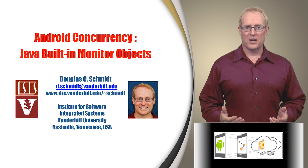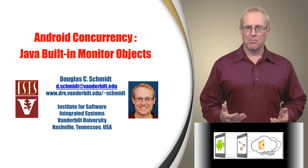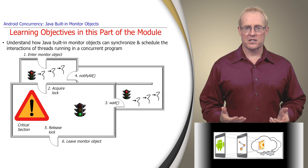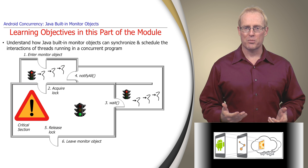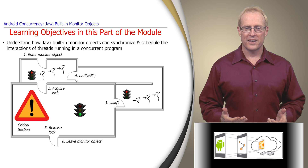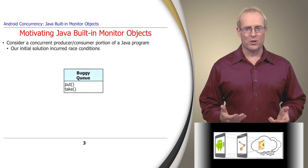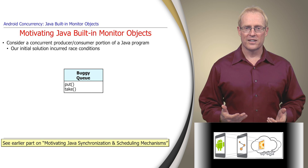Welcome to the next part of the module, which covers Java built-in monitor objects. These mechanisms can be used to synchronize and schedule the interaction of multiple threads in a concurrent program. This part motivates the need for built-in monitor objects by fixing the simple but buggy concurrent program shown in an earlier part of the module.